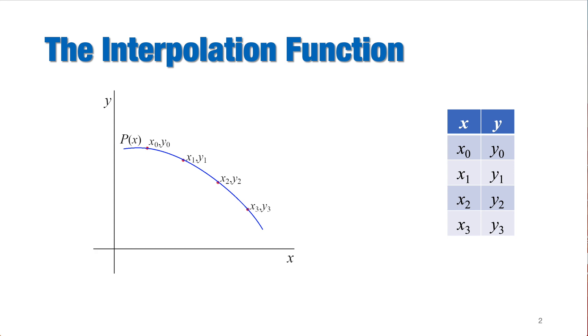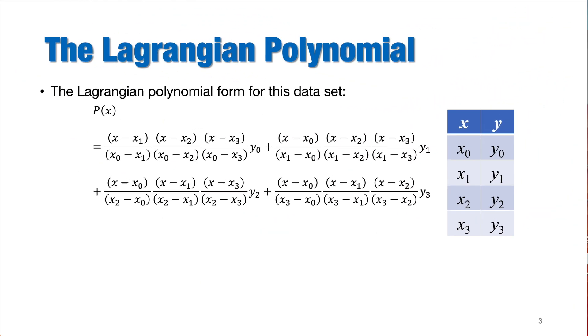Now, if we have an x value, let's call it xp, located between x1 and x2 for example, we can find its corresponding value of yp directly from the interpolation function px. Lagrangian interpolation depends on the Lagrangian polynomial where all values of the given data are included. For example, the Lagrangian polynomial for this data set can be written as shown here. Now, if you perform the multiplication in each term, you will get a component of the interpolation polynomial p of x. So, the final polynomial can be obtained after the summation of these components.